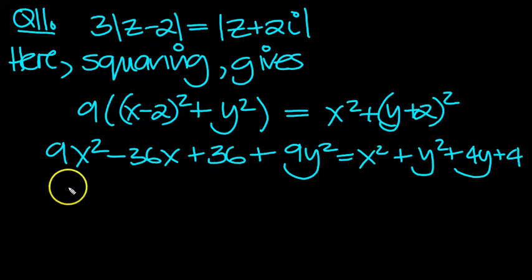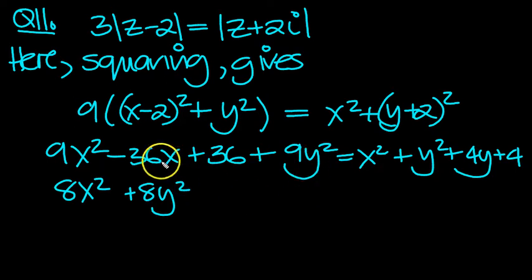So what have we got then? Move the x squared over we get 8x squareds. Move the y squared over to be with the other y squareds we'll get 8y squareds. Now the x is minus 36x there's no x here so it's just minus 36x.